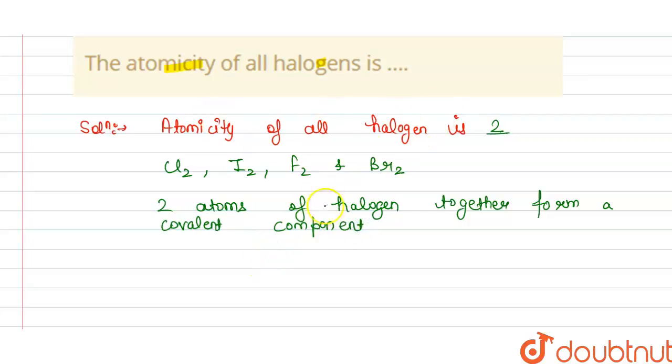So from this, we can say that atomicity of all halogen is 2. So we can write here, 2 is our correct answer and Cl2, I2, Br2, F2, all these occur as covalent compound. So this is our answer. Thank you.